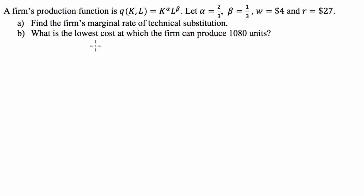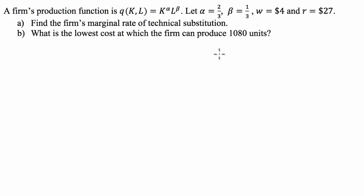G'day guys, we've got a microeconomics question for you today where we've got a firm with the production function K to the alpha, L to the beta. From that production function we've got to derive the firm's marginal rate of technical substitution and also find the lowest cost at which the firm can produce 1,080 units. So let's get started with part A.